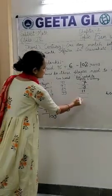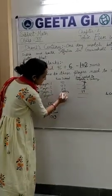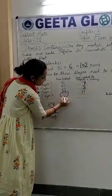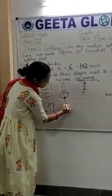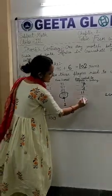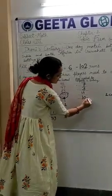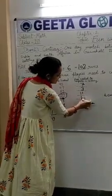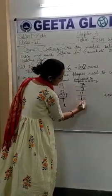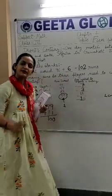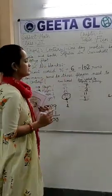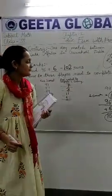Player 4 के 99 runs already हो चुके हैं। अगर इसे 1 run और मिल जाएगा तो इसकी century भी पूरी हो जाएगी। तो कितने runs चाहिए उसे? Only 1.